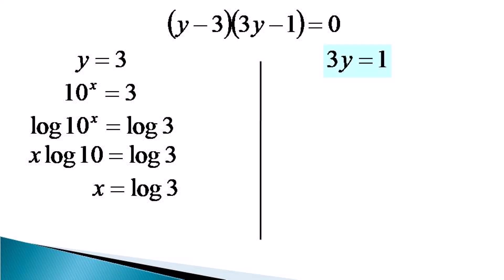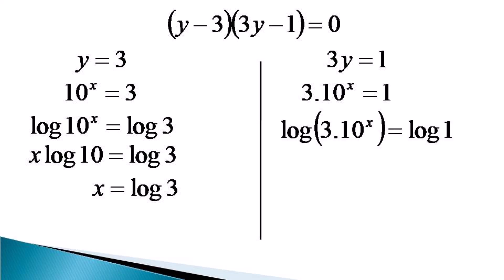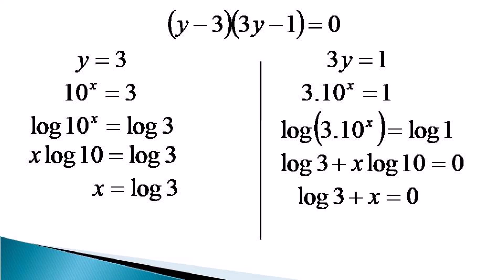For 3y is equal to 1, the substitution shows 3 into 10 raised to the power x is equal to 1. Taking log of both sides, we get log of 3 into 10 raised to the power x is equal to log 1. So log 3 plus x log 10 is equal to 0 after using the properties of multiplication and power law of the log, giving log 3 plus x equal to 0, or simply x is equal to minus log 3.